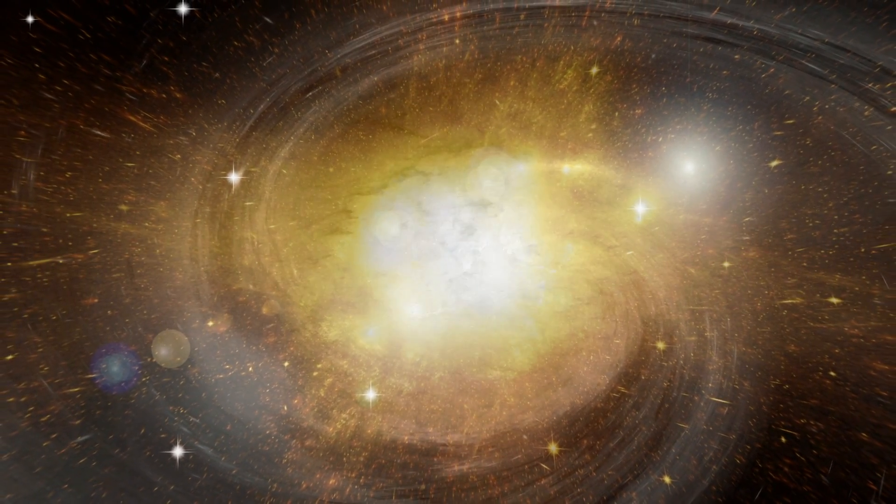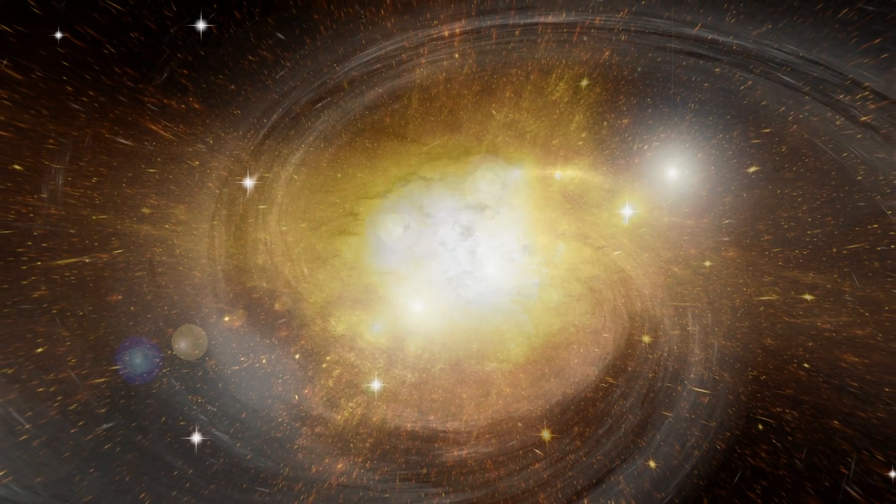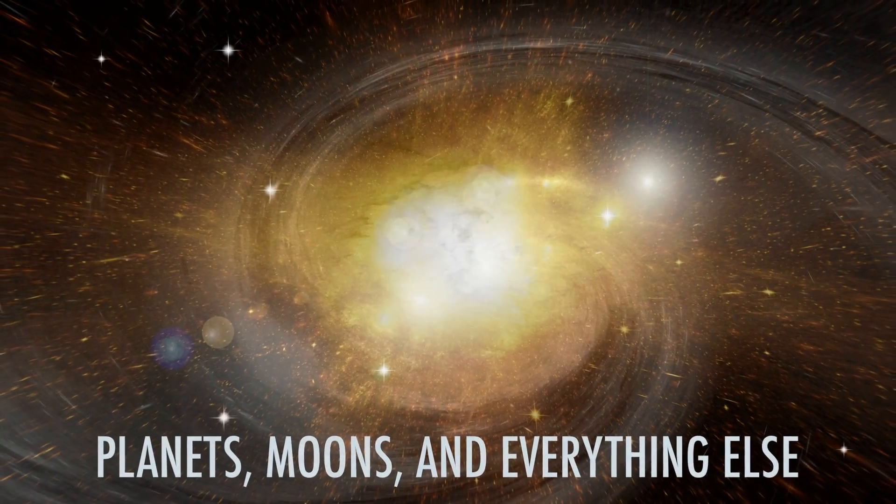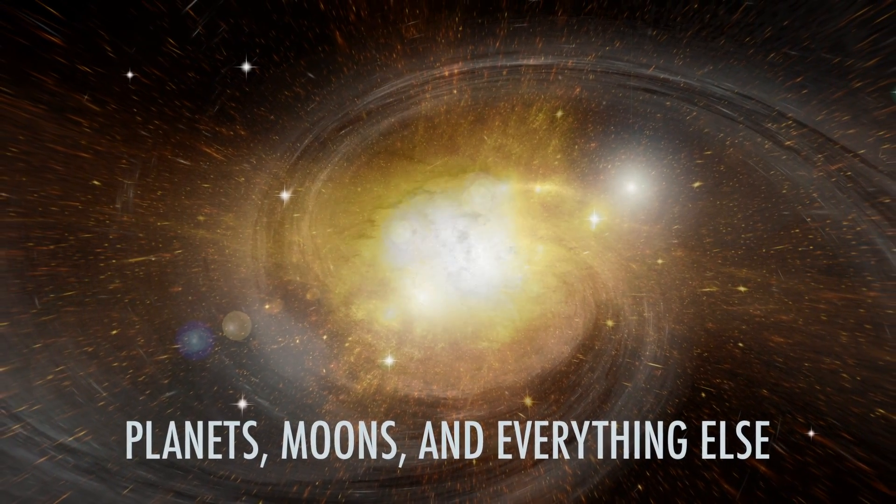This hasn't always been the case, though. Back when the solar system was forming, a cloud of matter formed into a disk that circled the sun. Over time, this material came together to form planets, moons, and everything else.